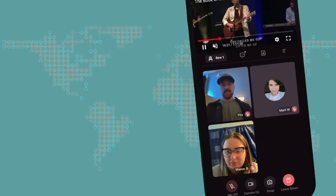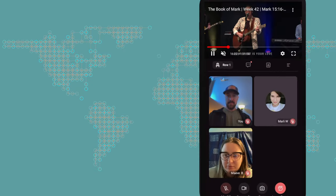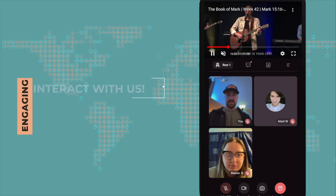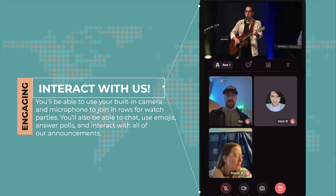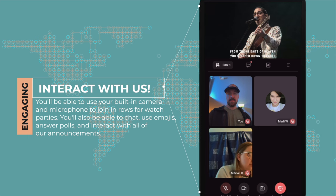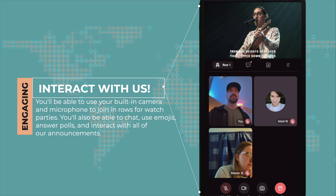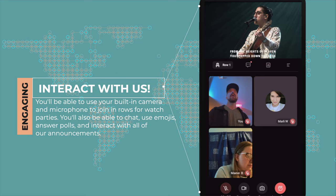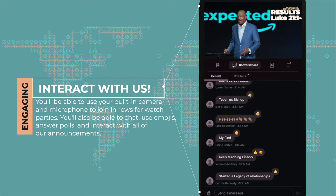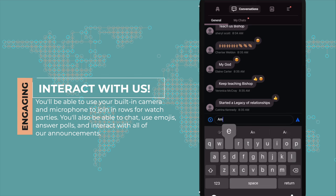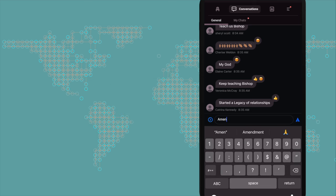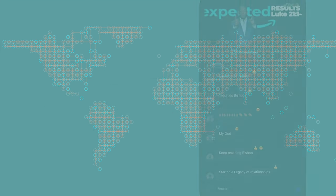Now that you're all logged in, you'll be able to click on a seat and start or join a watch party. You'll be able to use your built-in camera and microphone on your mobile device as if you were really there. You'll be able to chat, use emojis, answer polls, interact with announcements, and follow along with events seamlessly.